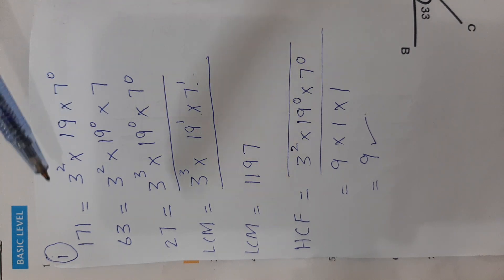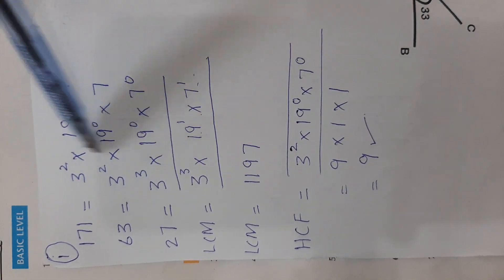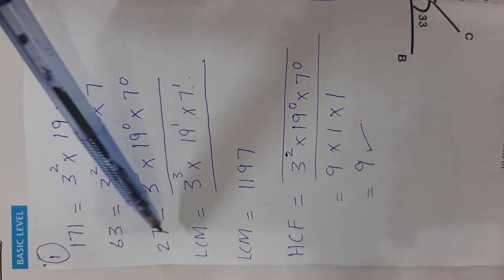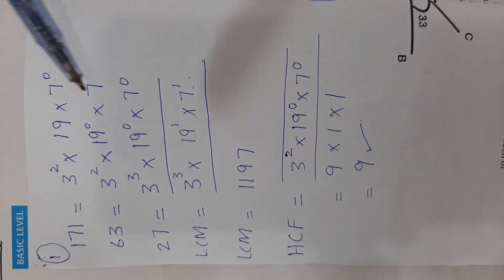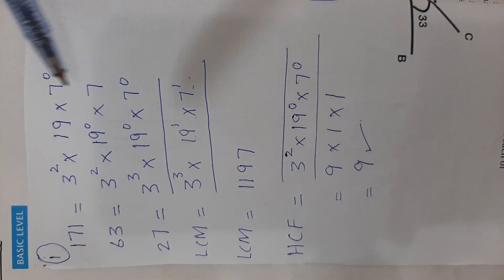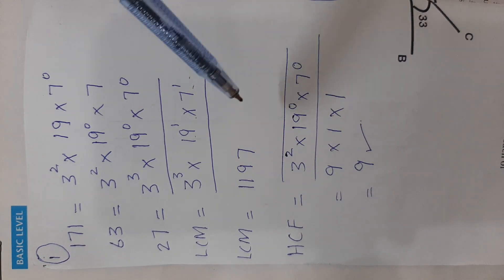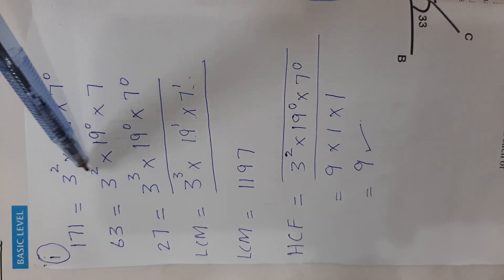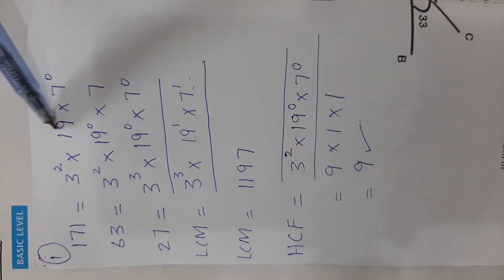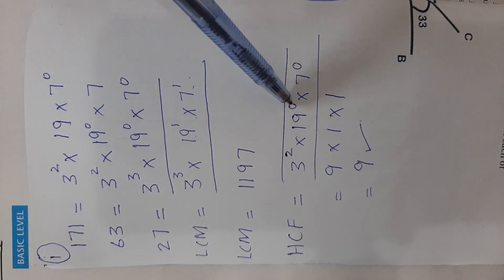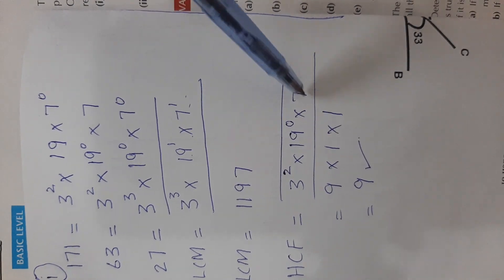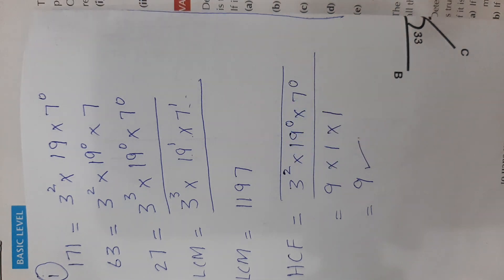Complete the columns: any factor missing in a line should be entered with power 0. For HCF, take out the minimum power from each column. From the column of 3, the minimum is 3². From the column of 19, the minimum is 19⁰. From the column of 7, the minimum is 7⁰. So HCF = 3² × 19⁰ × 7⁰ = 9 × 1 × 1 = 9.